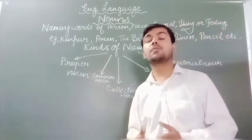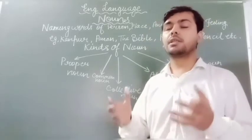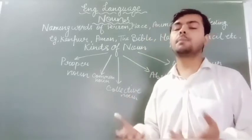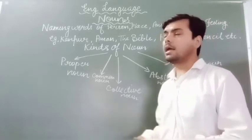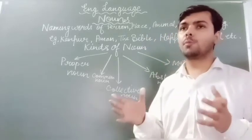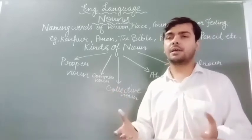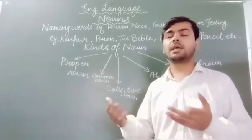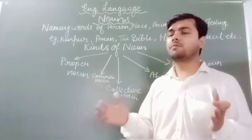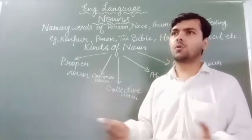अब बात करते हैं Collective Nouns की। Collective Nouns को हम हिंदी में समुदाय वाचक संज्ञा कहते हैं — collection of person, place, animal और thing। जैसे बहुत सारी flowers को मिलाएं तो — a bouquet of flowers; बहुत सारी keys — a bunch of keys; बहुत सारी fishes — an aquarium of fish या a school of fishes।